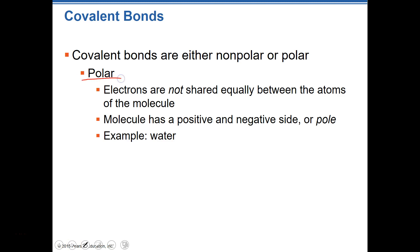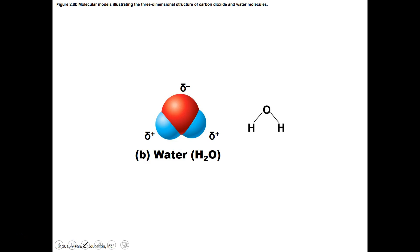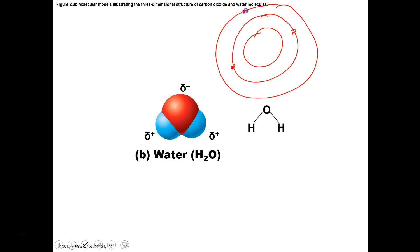Polar covalent bonds occur when electrons are not shared equally — one side has the electrons more of the time than the other, making one side slightly positive and one side slightly negative. An example is water. We have an oxygen atom with two electrons in its inner shell and six in its outer shell, and then two hydrogen atoms, each with one electron in its outer shell — and the sharing of those electrons in water is unequal, making water a polar molecule.